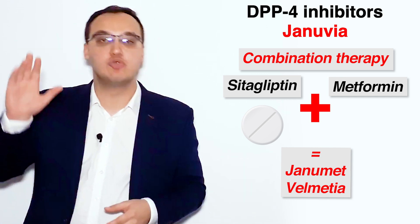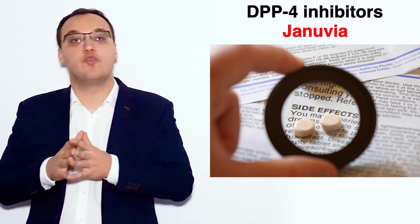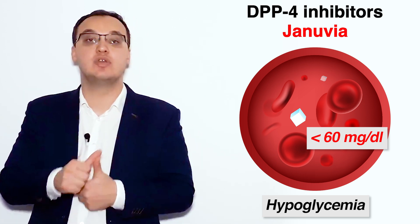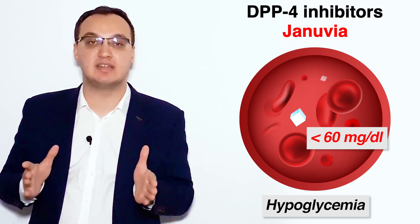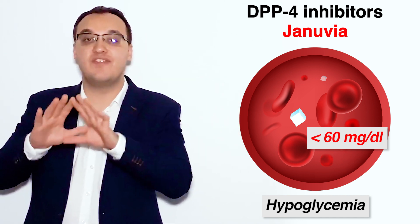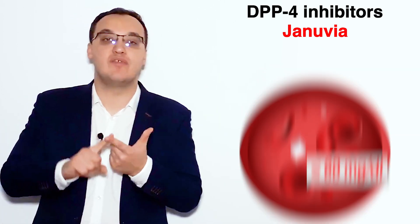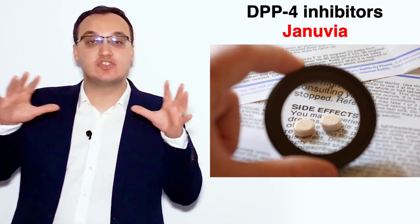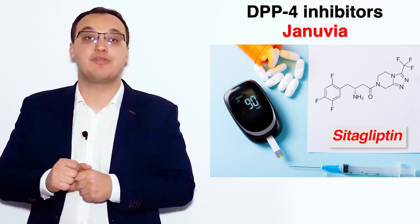We also have Velmetia as another trade name. Side effects of Januvia can include hypoglycemia — blood glucose less than 60 mg/dL — nausea, headache, abdominal discomfort, acute pancreatitis, and flatulence. These side effects are very rare but important to mention.